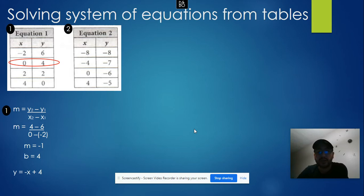Now let's write an equation for the second table. Same step, using the two-point formula. In this case it will be negative 7 minus negative 8, divided by negative 4 minus negative 8. On the top will be 1 divided by positive 4, which equals 1 over 4. That's my slope.